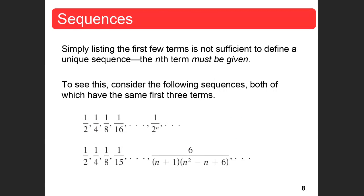Simply listing the first few terms is not sufficient to define a unique sequence — the nth term must be given. For example, 1/2, 1/4, 1/8 — if I just list those first three terms, they look the same for two different sequences. But then the next term is 1/16 in one sequence and 1/15 in the other. The nth terms are different, and the sequences deviate significantly. So you have to have the nth term in order to define a sequence.